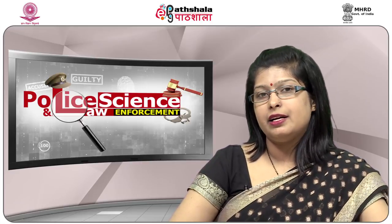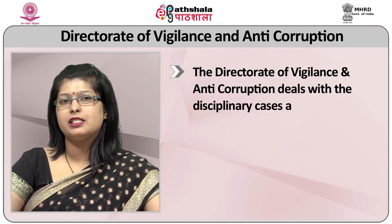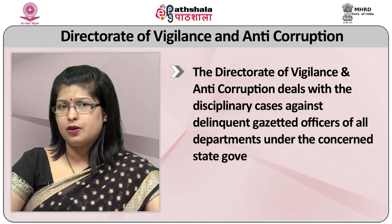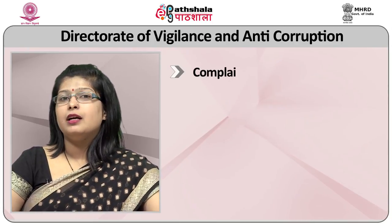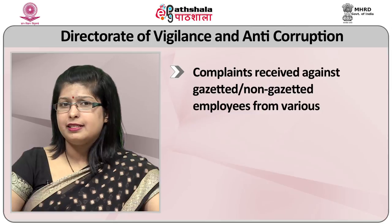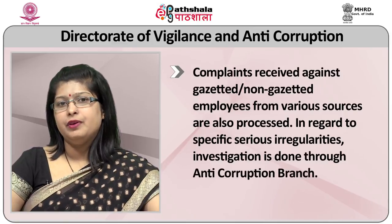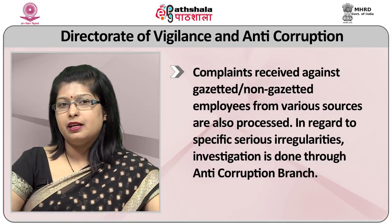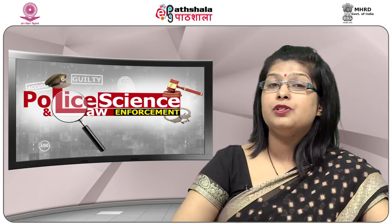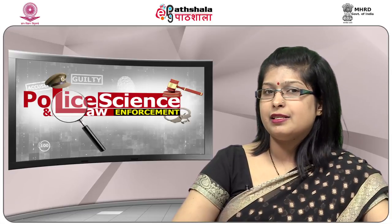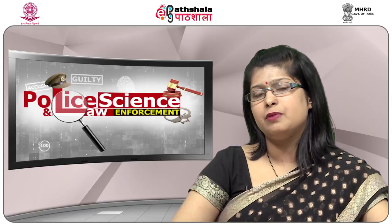Regarding the Directorate of Vigilance and Anti-Corruption, it deals with the disciplinary cases against delinquent gazetted officers of all departments under the concerned state government. Complaints received against non-gazetted employees from various sources are also processed. With regard to specific serious irregularities, investigation is done through the Anti-Corruption Branch. The branch conducts surveillance and apprehends corrupt public servants through laying traps and raids, and presents them in the criminal court.